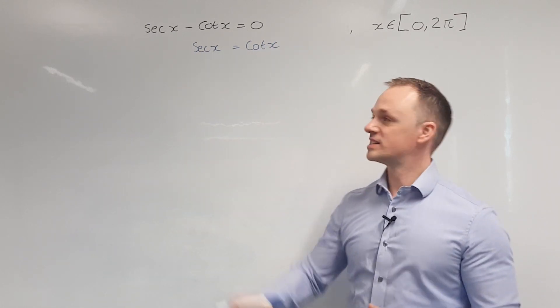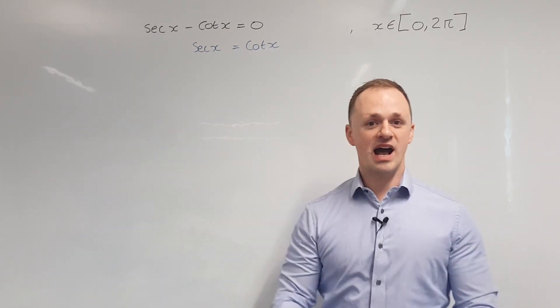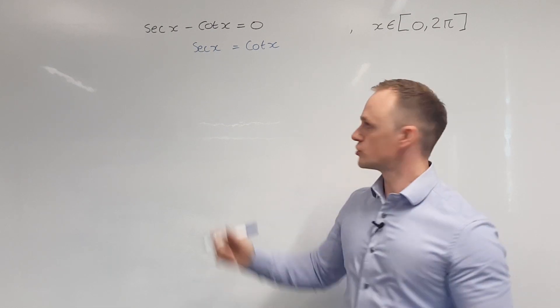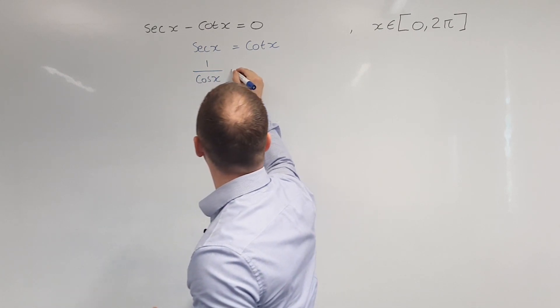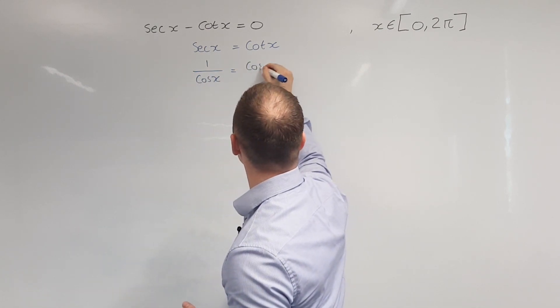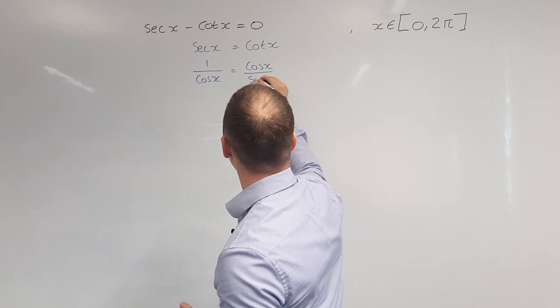From here, we're going to take sec x and cos x and write them in terms of sine and cos. So sec x is 1 over cos x and cos x is cos x over sine x.